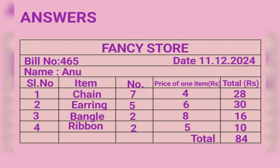Completing the bill: Chain — quantity 7, price per item Rs. 4, total: 7×4 = Rs. 28. Earring — quantity 5, price per item Rs. 6, total: 5×6 = Rs. 30. Bangle — quantity 2, price per item Rs. 8, total: 2×8 = Rs. 16. Ribbon — quantity 2, price per item Rs. 5, total: 2×5 = Rs. 10. Grand total of all 4 items: 28 + 30 + 16 + 10 = Rs. 84. Thank you, please like, share and subscribe the channel for more updates.